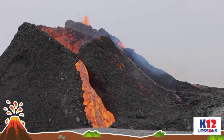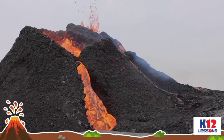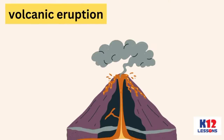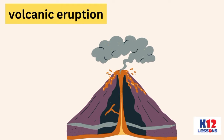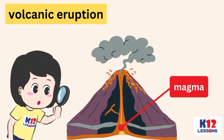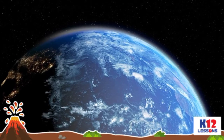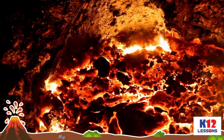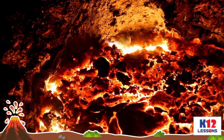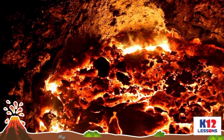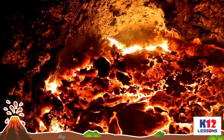The eruption of a volcano is a process. The volcanic eruption is a way for magma from inside the Earth to escape. Deep within the Earth, the temperature is high, causing the rocks to melt and form magma.